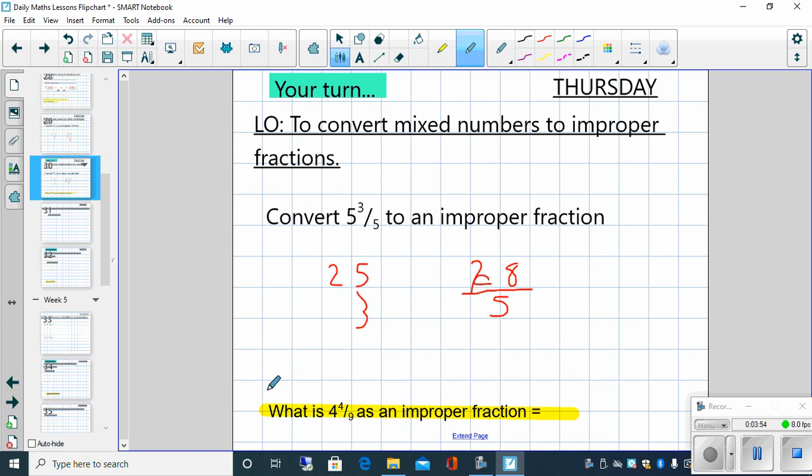Now when you get to your arithmetic questions this morning, the conversion of a mixed number to an improper fraction is what is 4 and 4 ninths as an improper fraction. So have a real good try at that and I will see you tomorrow. Enjoy your maths.